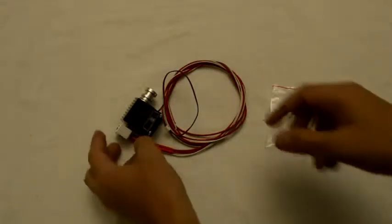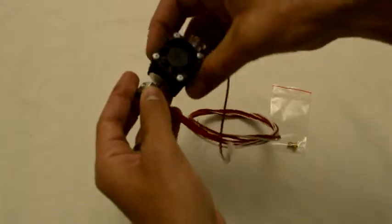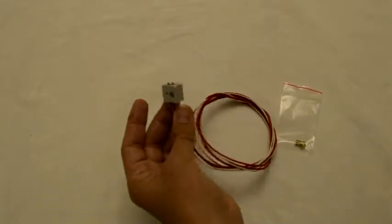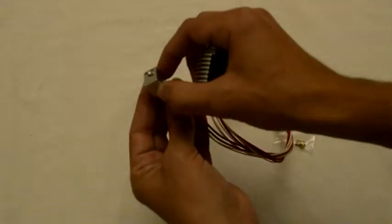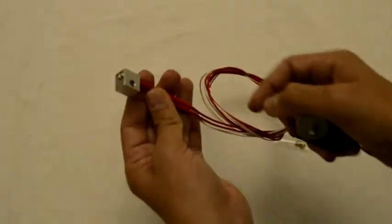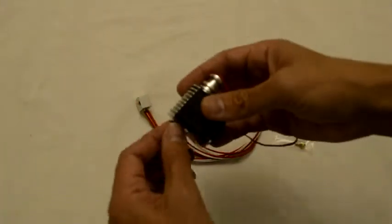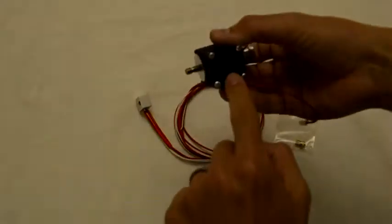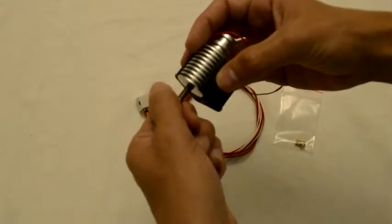Firstly, let's have a look at how the hot end is assembled. This will give us an understanding of how it will function. We have the heater block which consists of the aluminum block with the thermistor and the heater cartridge mounted to it. On this side we have the heat sink with the fan and the heat break that screws into the heat sink.